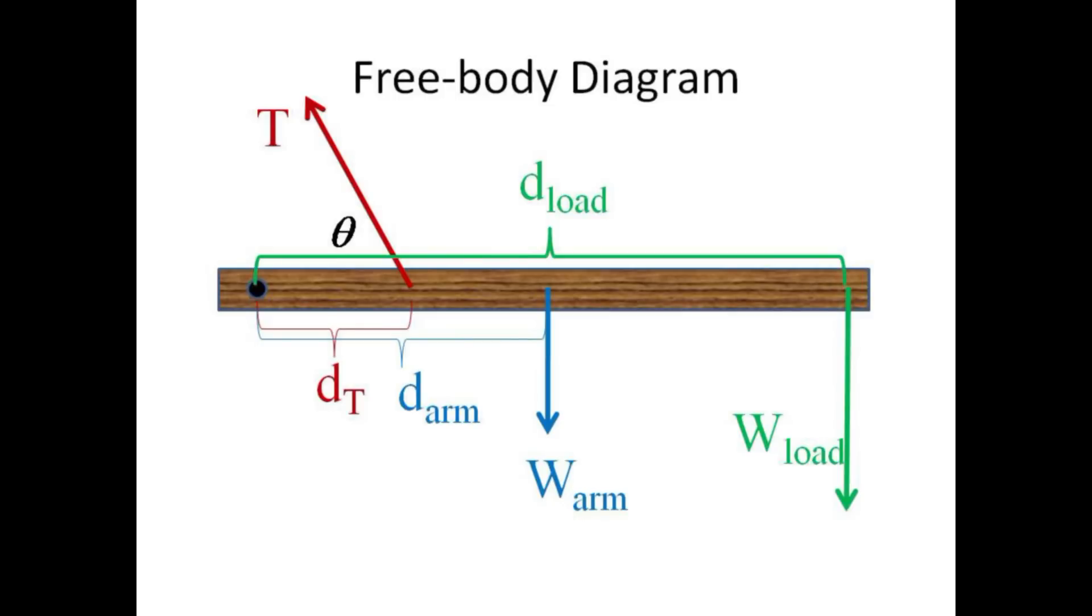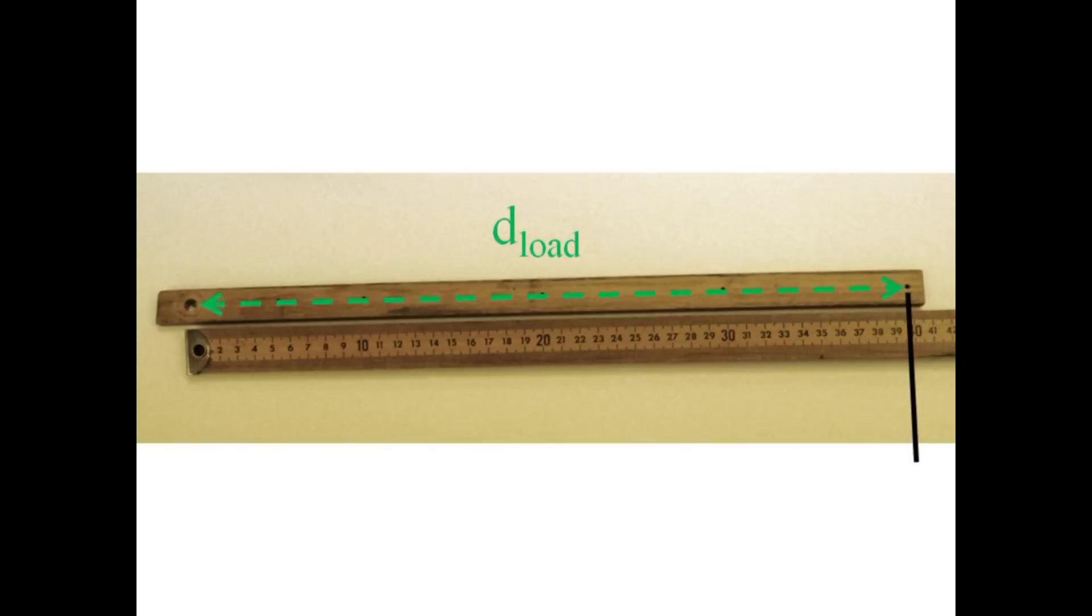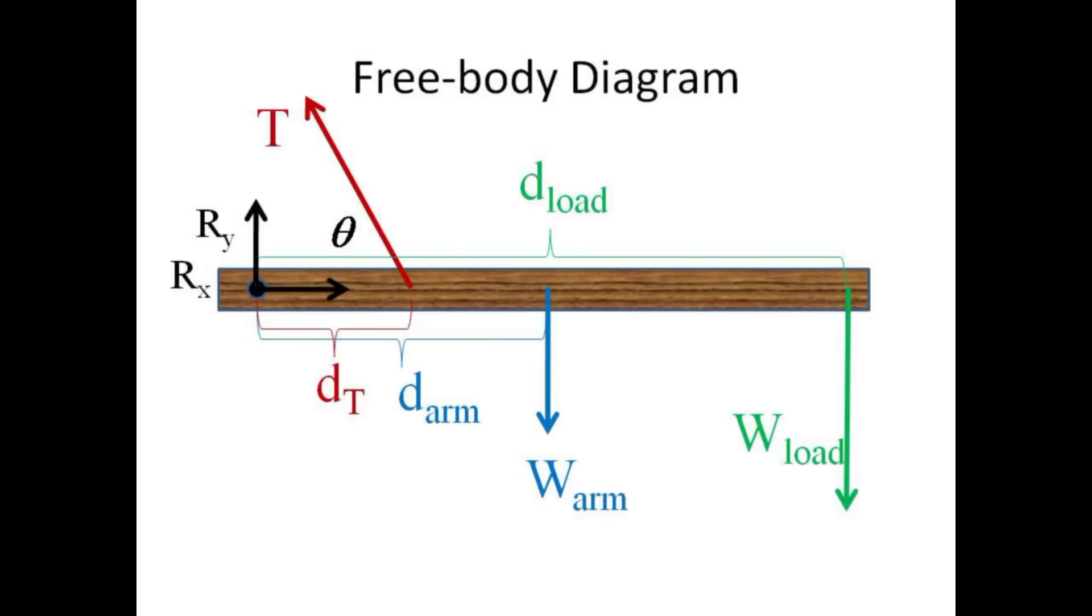The load produces a clockwise torque at a distance D load from the elbow joint to the point where the load is attached. The x and y components rx and ry of the reaction force of the elbow joint on the forearm doesn't produce any torque about the elbow joint itself, so we will ignore this force.